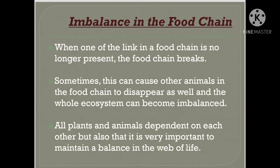When something like this happens, when food in the world is limited, there is an imbalance in the food chain. This imbalance tells us that not only are all plants and animals dependent on each other, but it is also very important to maintain a balance in the web of life. In short, we can see the effects of imbalance in the food chain. When one of the links in a food chain is no longer present, the food chain breaks. Sometimes this can cause other animals in the food chain to disappear as well, and the whole ecosystem can become imbalanced.